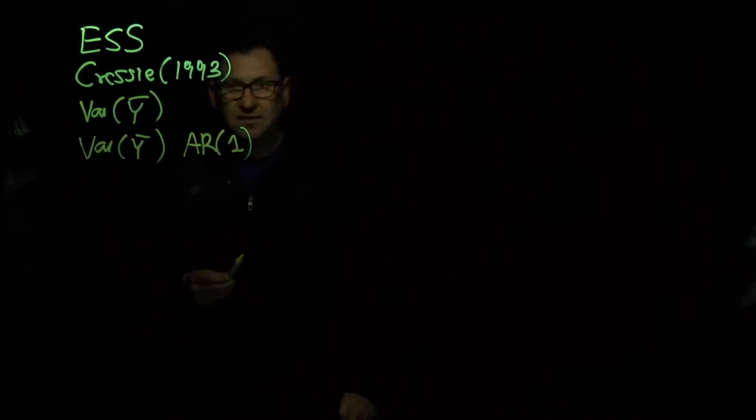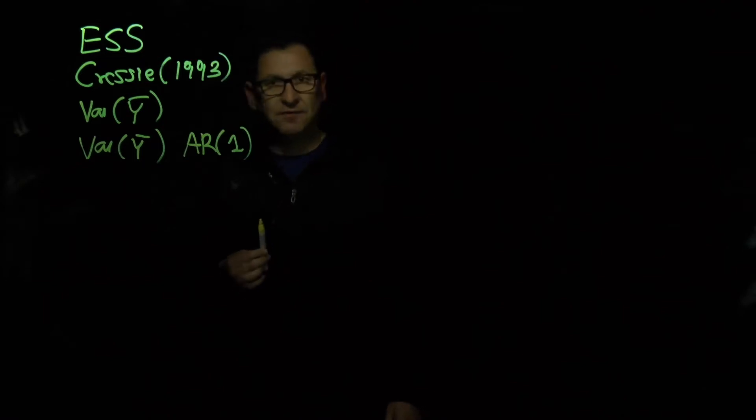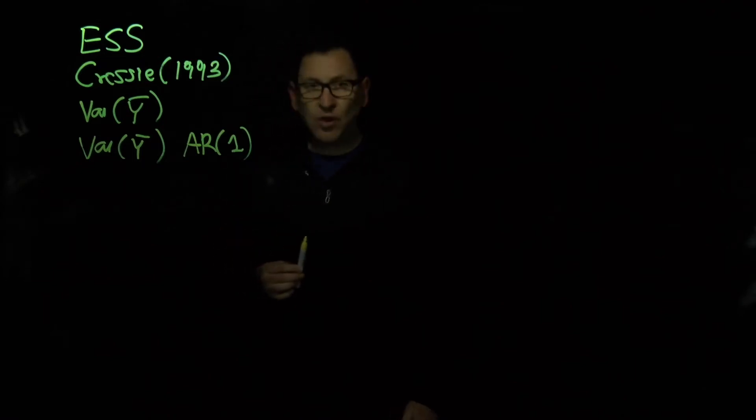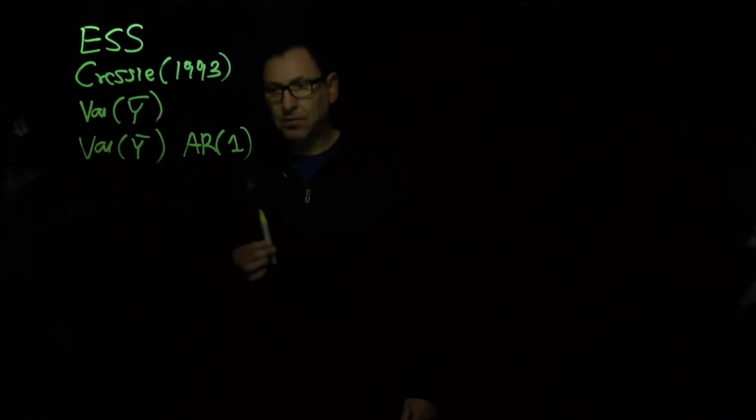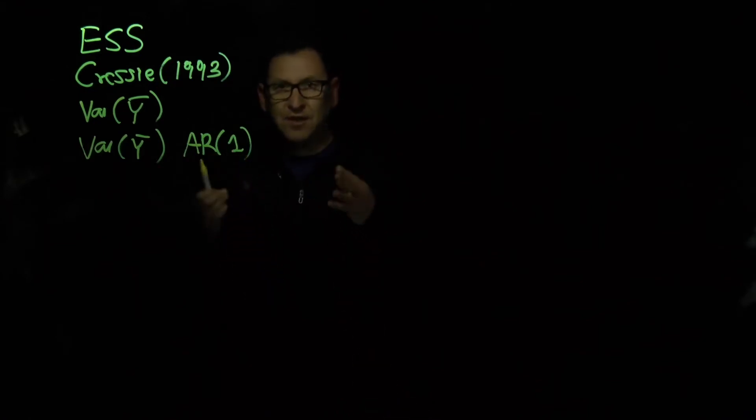So the question we answer in that paper is how many independent observations we have contained in a sample of size N for any correlation structures.